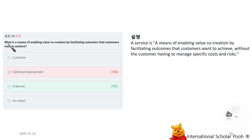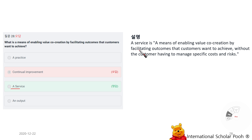What is the means of enabling value co-creation by facilitating outcomes that customers want to achieve? A service. A service is a means of enabling value co-creation by facilitating outcomes that customers want to achieve without the customer having to manage specific costs and risks.